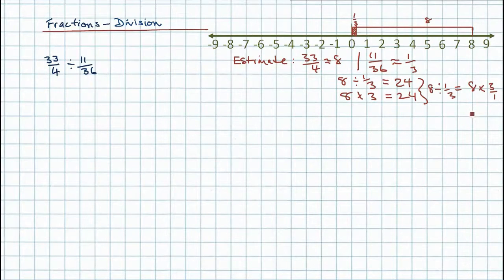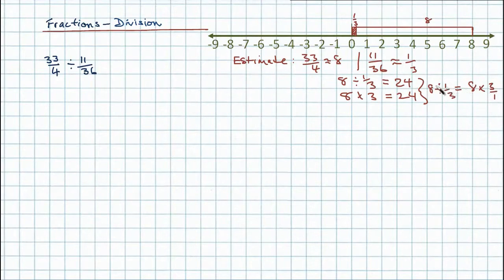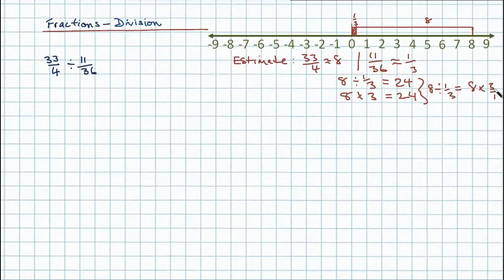The technique I'm going to use will be extremely helpful for solving these kinds of problems. We've got 8 divided by a third being equivalent to 8 times 3. This gives us a technique of converting from division to multiplication, because the fraction here is simply inverted — what was 1 divided by 3 becomes 3 divided by 1.